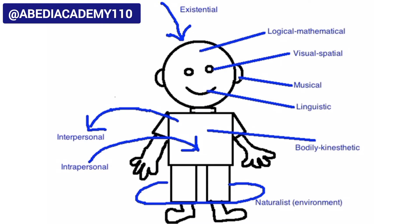This picture symbolizes the different intelligences we have. First on top we have existential and logical-mathematical intelligence. Both these intelligences require cognitive ability.